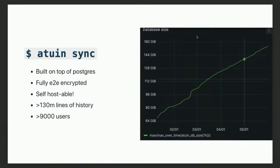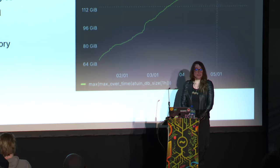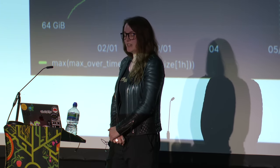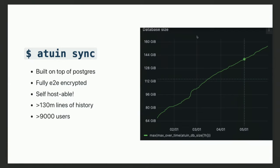We still haven't solved my original problem though. What I've described so far is a nicer way of searching shell history, but not really solving the problem of multiple machines. Atuin is in two parts: the Atuin client I've described, and also the Atuin server. The server is a pretty simple HTTP API built on top of Postgres. It is fully end-to-end encrypted — we don't want users uploading plain-text shell history to servers. It's also fully self-hostable, with Docker images, Helm charts, and more. There's an Atuin server I host, recently called Atuin Cloud, which currently has about 130 million lines of shell history for just over 9,000 users.